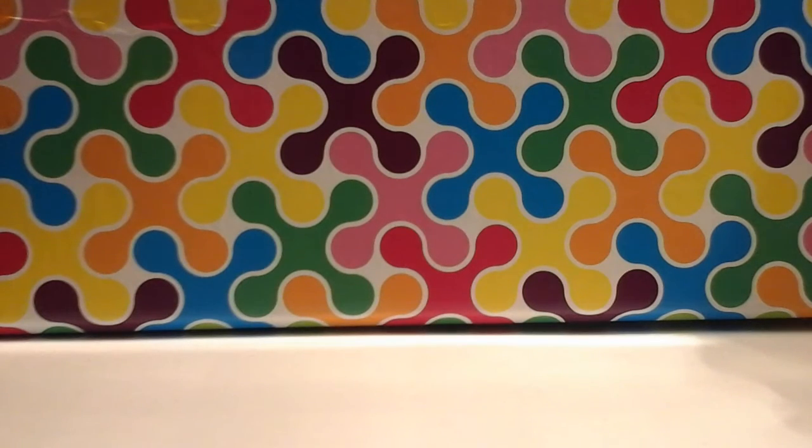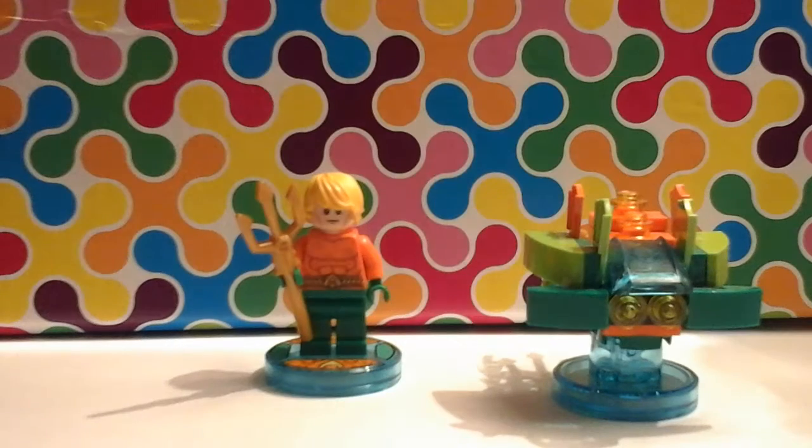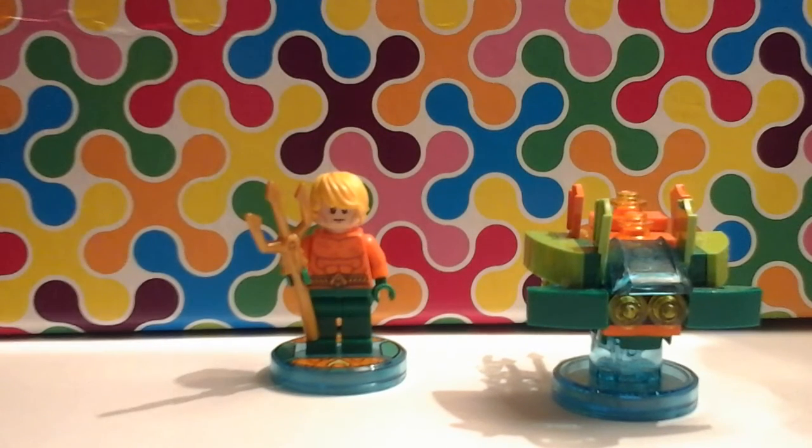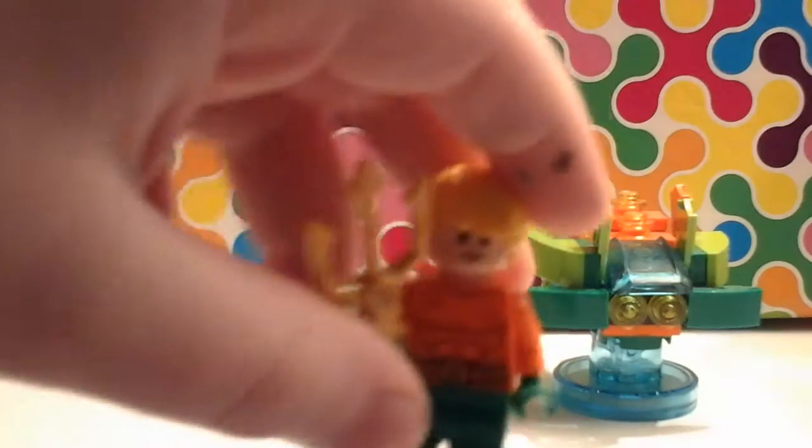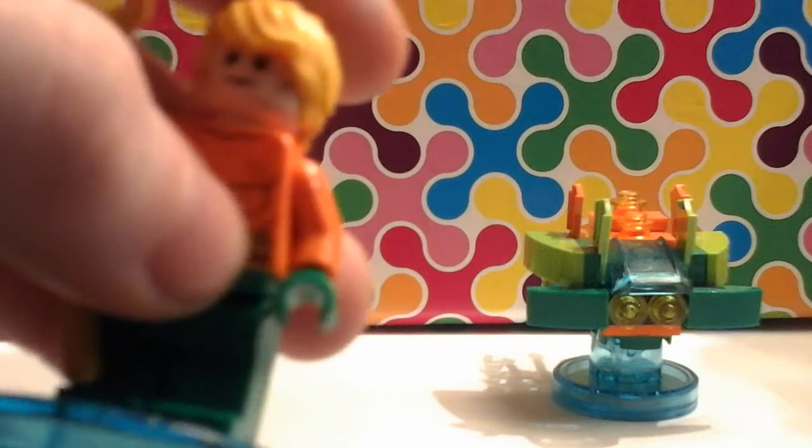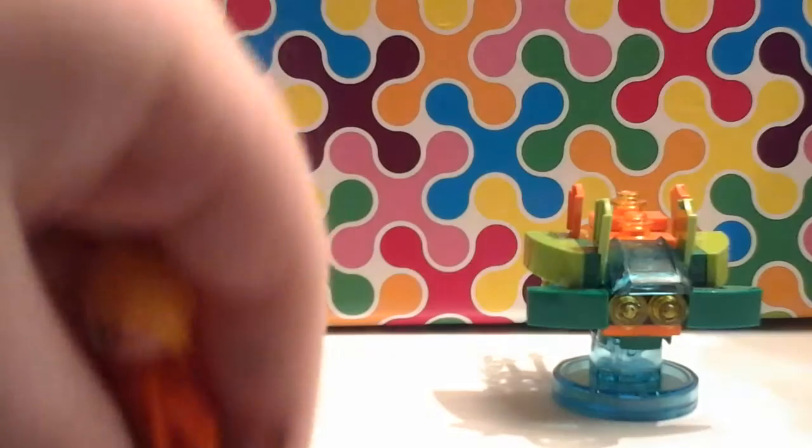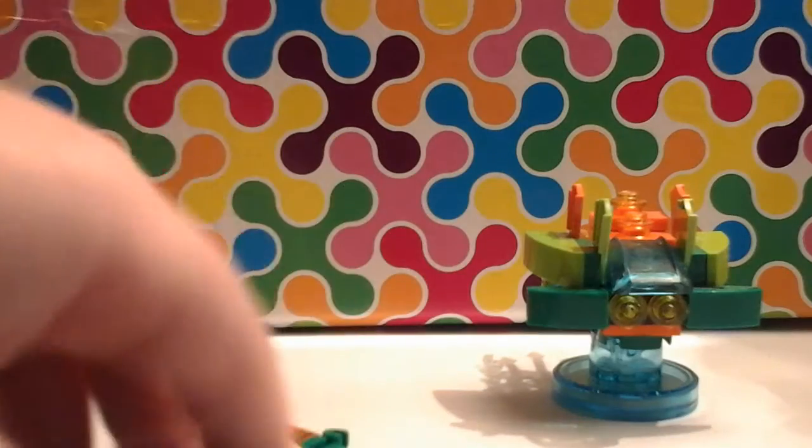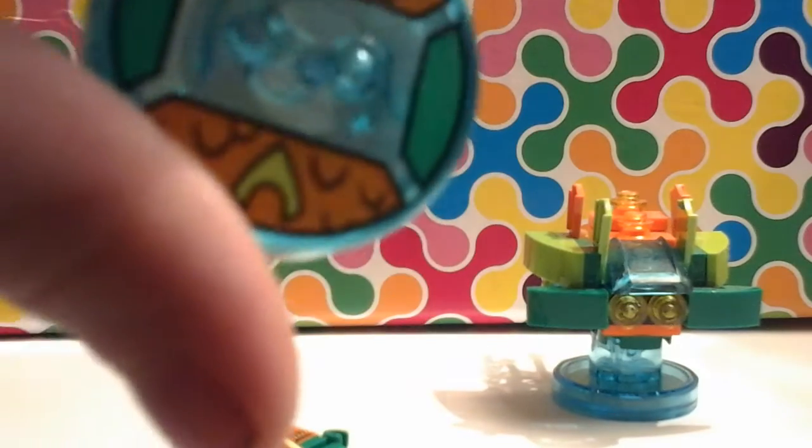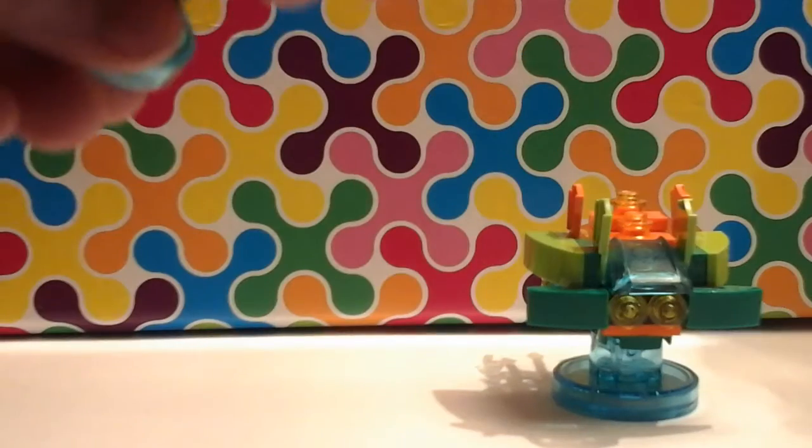And he is Aquaman and his aqua shipy thing. I forget what it's called. So here he is, the king of Atlantis. There's his trident. He's got his orange top and his green leggings. And here's his base with his colors there and the Aquaman symbol there.